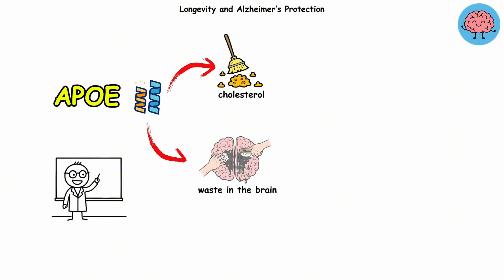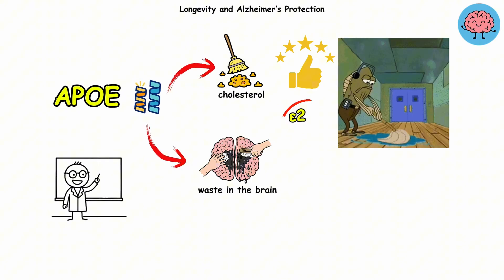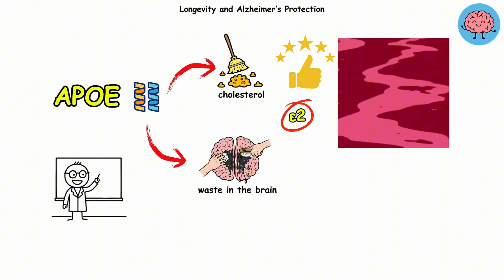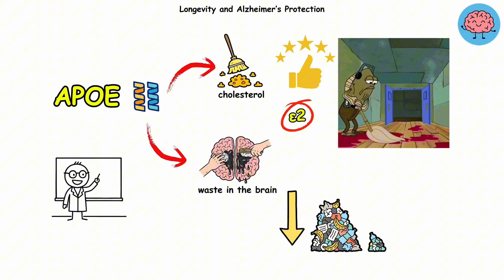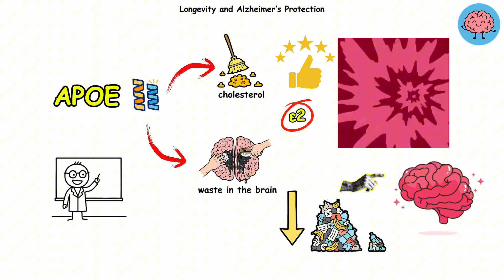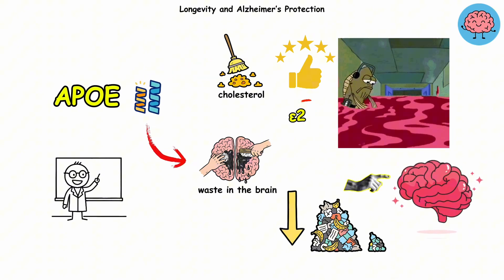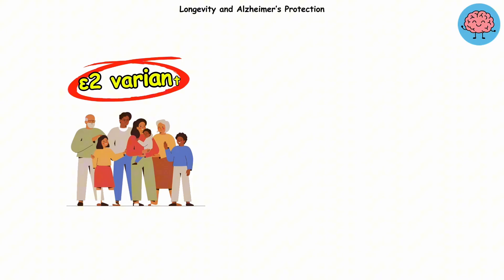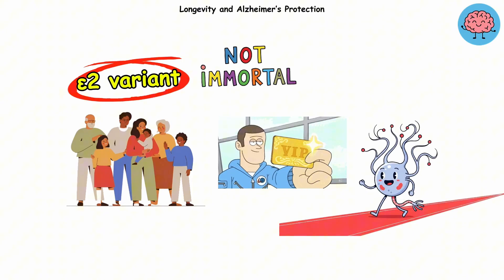Here's how it works. Apolipoprotein E helps clean up cholesterol and sticky waste in the brain. The epsilon 2 version just does it better, like having a super-efficient janitor who doesn't take coffee breaks or holidays. Less build-up means less chance of those harmful brain plaques sticking around and killing brain cells. People with the epsilon 2 variant might not be immortal, but their neurons are definitely getting VIP treatment.